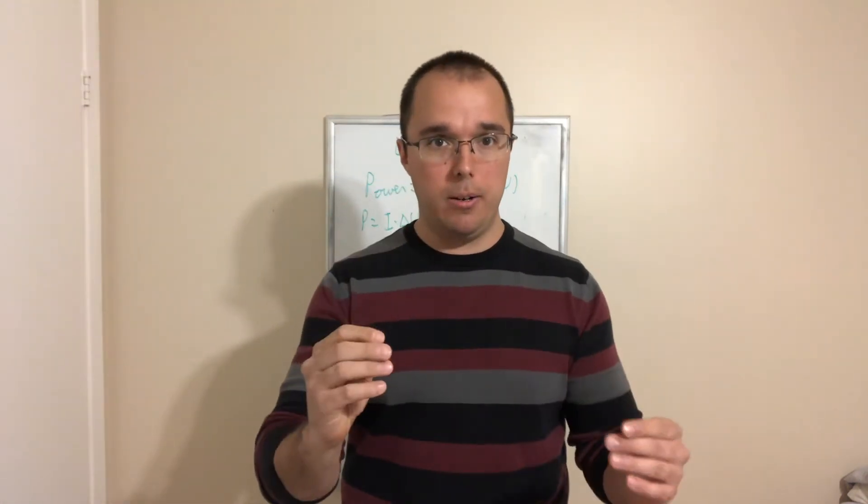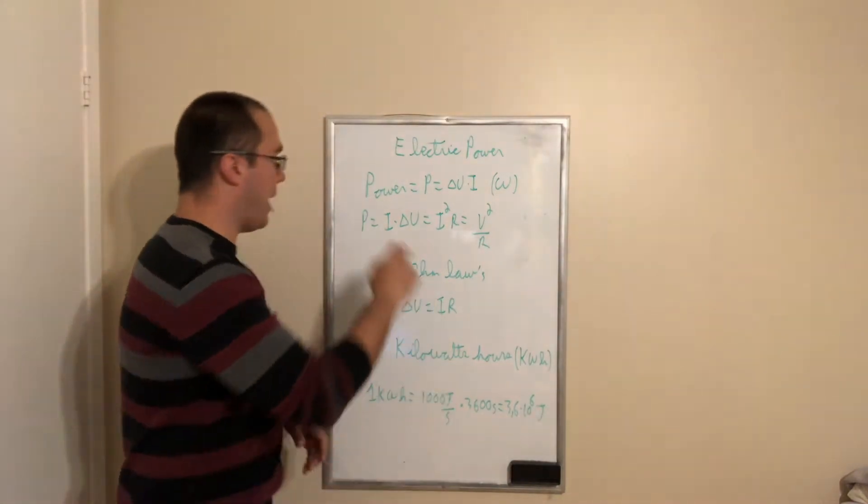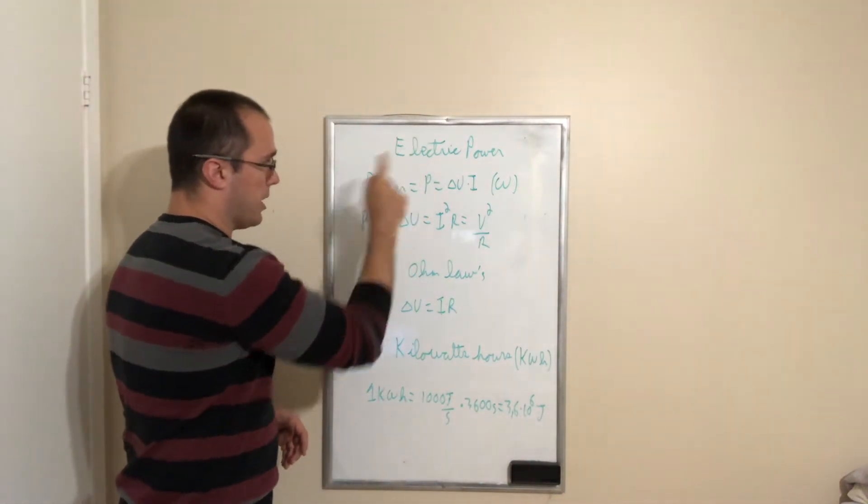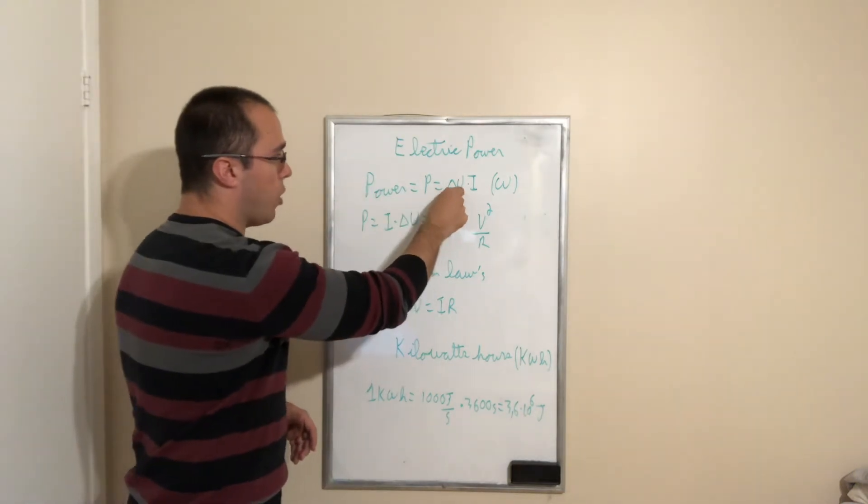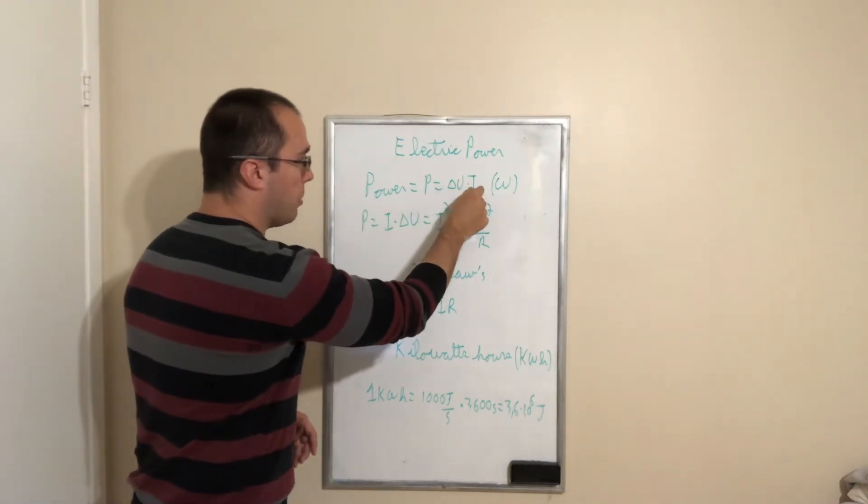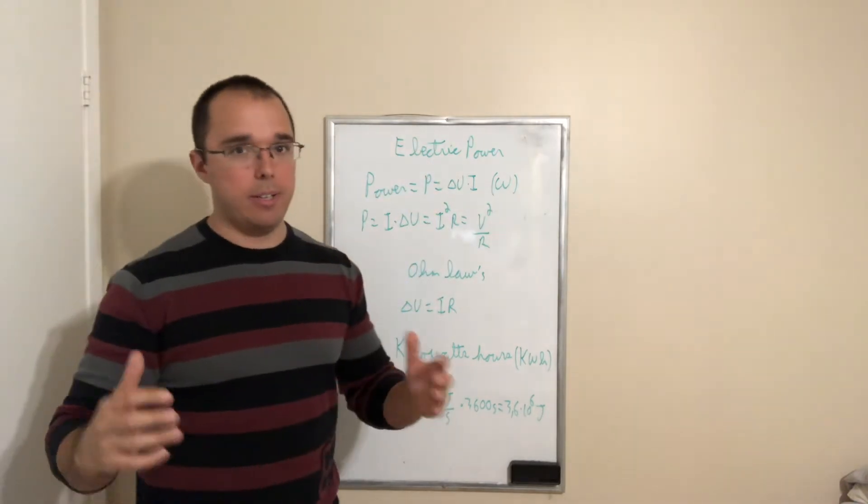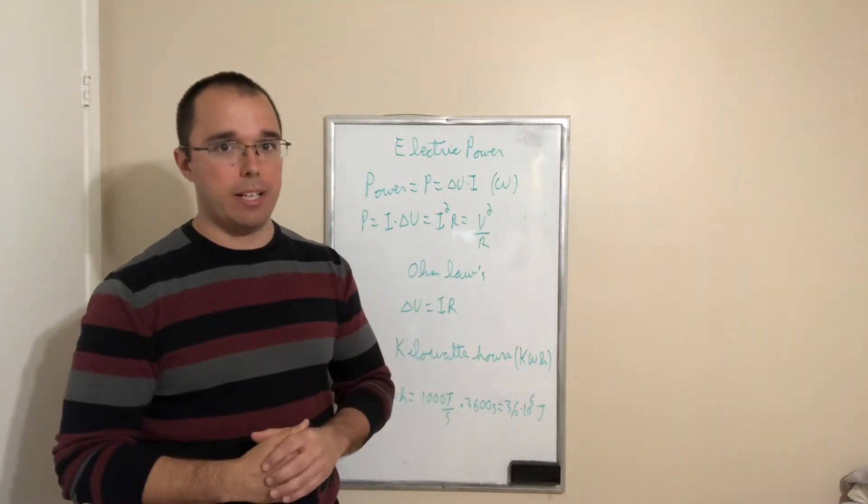So let's start with the electric power. Power is equal to P, so we use the uppercase letter P, is equal to the drop in voltage multiplied by the current. It is in watts. So power did not change. We're still using the watt here.